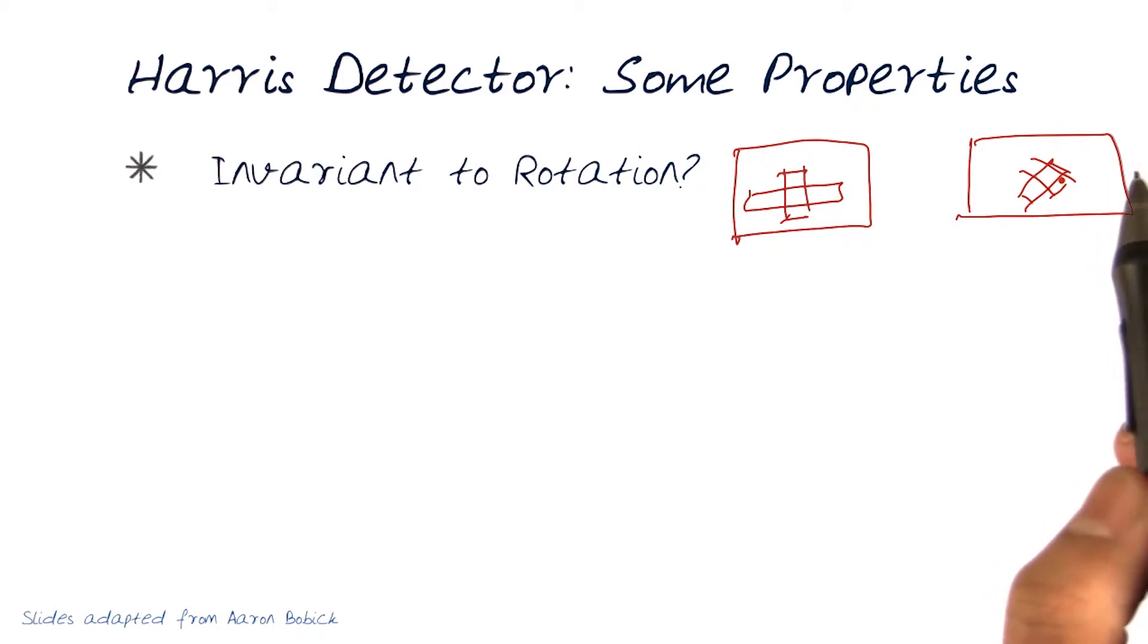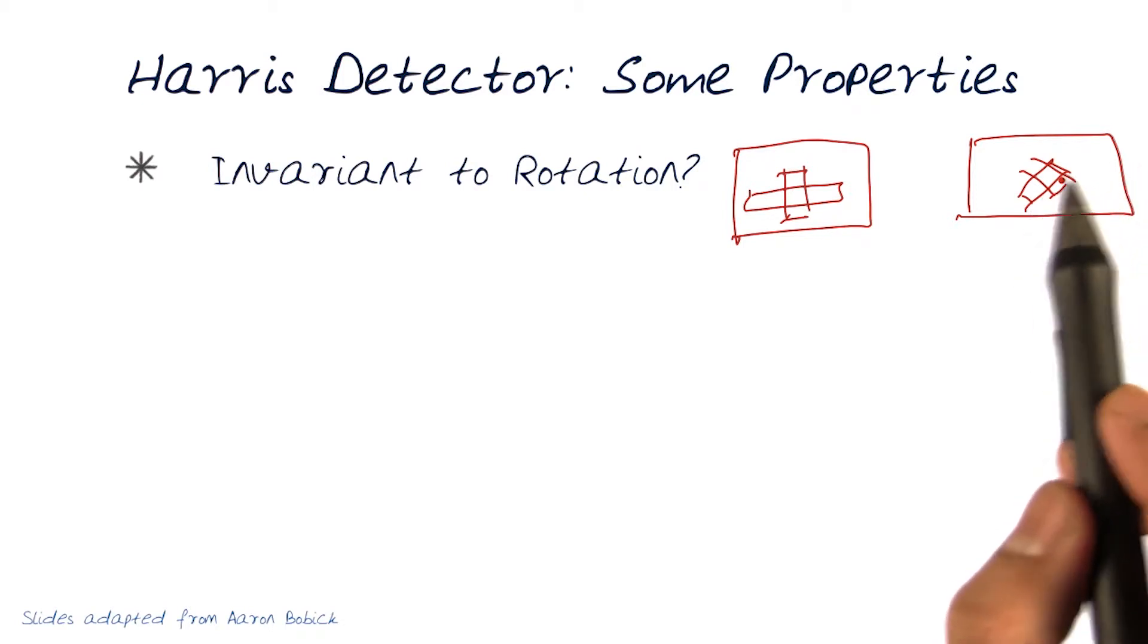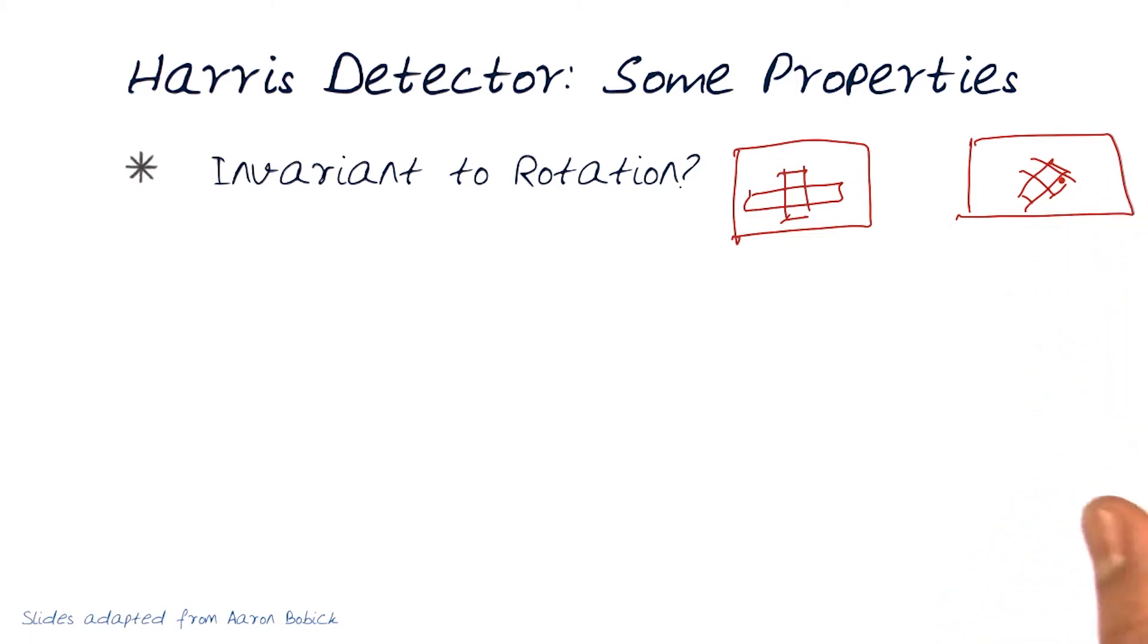And of course, I sometimes want to be able to find objects even with variations across the board on lighting and stuff like that. So that's the next part. Can we actually also find edges if there is a variance in image intensity?